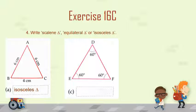Now let's move to the next figure. In this figure, all the angles are equal to 60 degrees, meaning all the angles of the triangle are equal. Children, when all the angles of the triangle are equal, all sides are also equal. So this triangle is an Equilateral Triangle, because only in an Equilateral Triangle all the angles are equal and they are equal to 60 degrees.